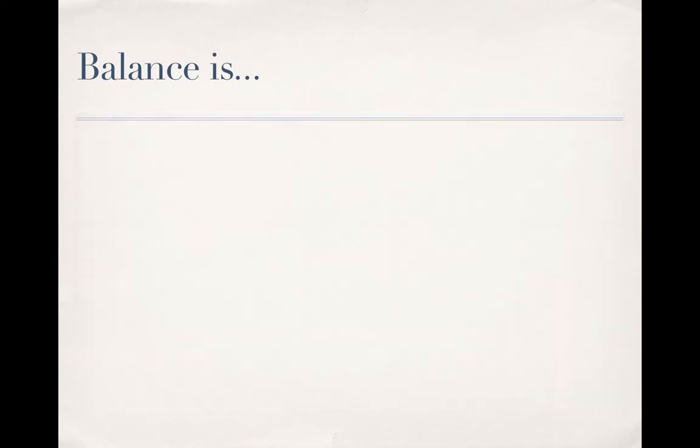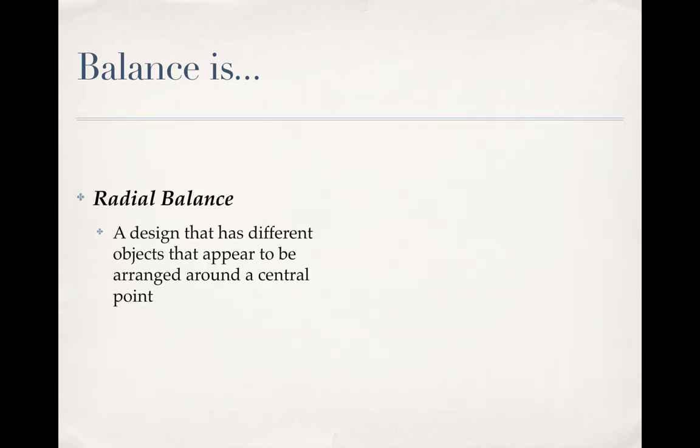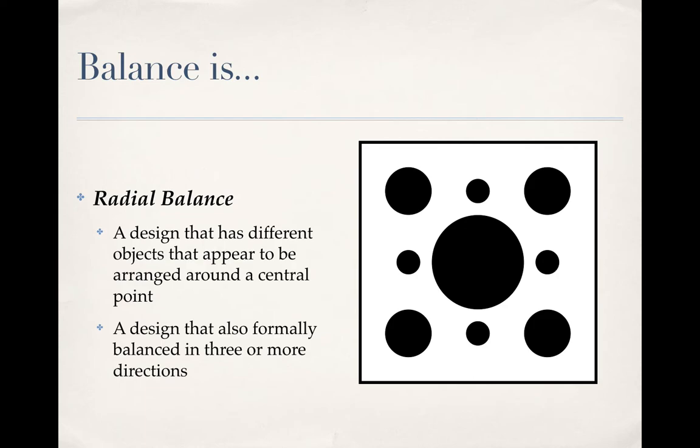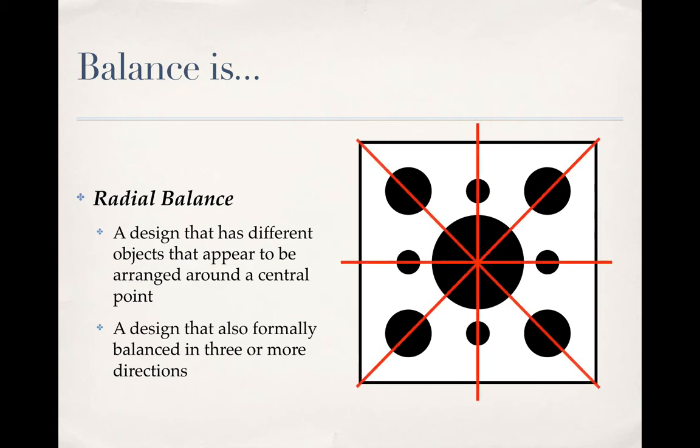If we balance it in three or more directions, then we're talking about something that is probably radial balanced. Radial balance has objects that are arranged around that center point. All these circles appear to be around that center giant circle. It also is formally balanced in more than three directions.